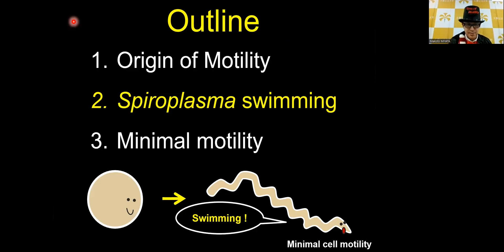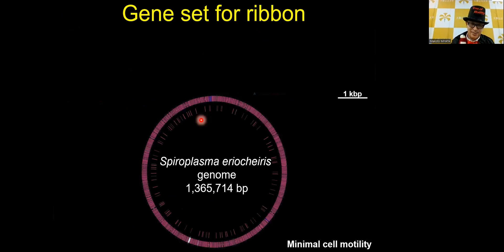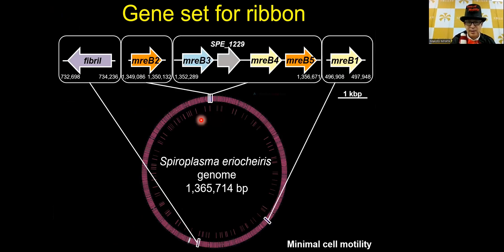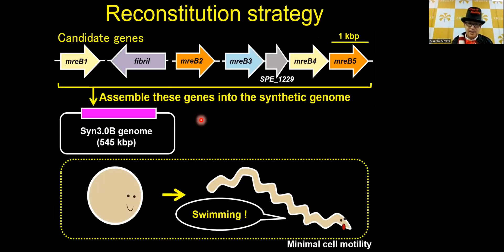Moving on to our minimal motility system. This is the genome schematic of Spiroplasma. We can see one gene named the fibril protein and as many as five MreB proteins. There are seven candidates for the components of the ribbon, all coded on the Spiroplasma genome. What we tried was to collect these genes into a single DNA fragment and express these proteins in JCVI-syn3 to see what happens.